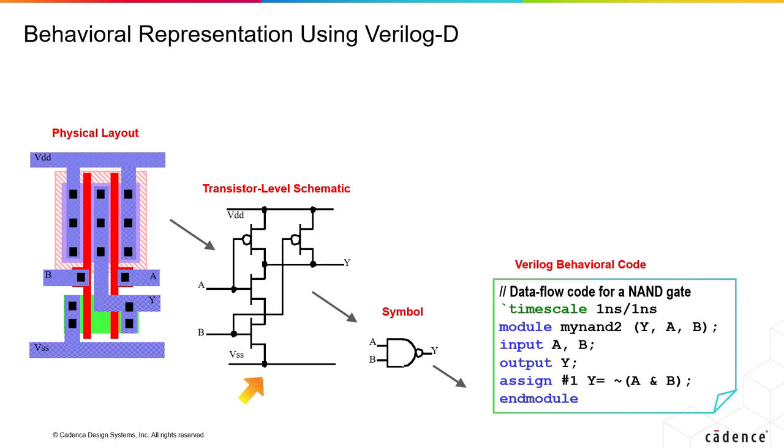In a typical transistor-level schematic, you design a NAND gate with two NMOS and two PMOS and have them connected like this to get a NAND gate operation.